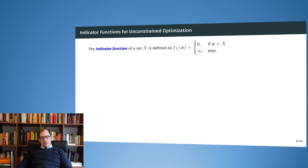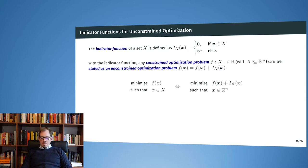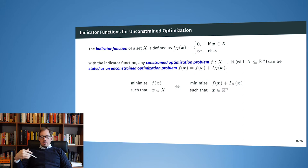What you see here is the definition of an indicator function. It is defined on a set X: for all points that are included in X, it returns 0, and for all points outside of X, it returns infinity. Together with this indicator function, we can transform a constrained optimization problem into an unconstrained one.